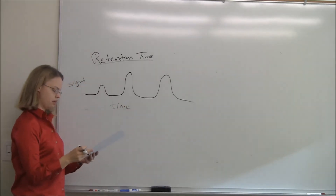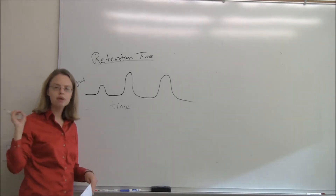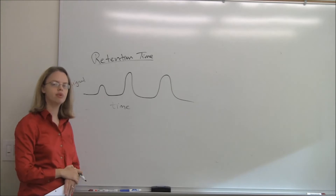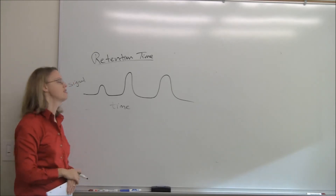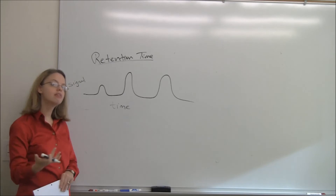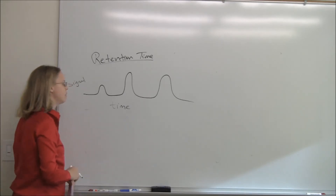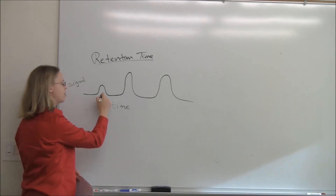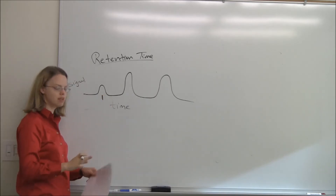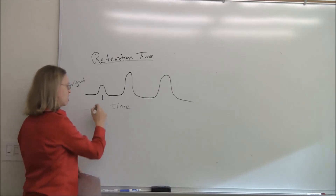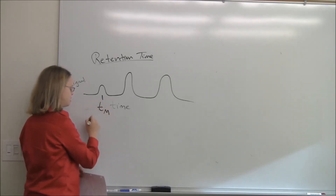We're looking at retention time. Now if we have a column and we push something through — flow it through — even if it spends no time in the stationary phase, it's going to take some given amount of time just to push everything through that column. There's some time it would take just to push the mobile phase through the column, even if there were no analyte interactions. We usually call this time T-sub-M.